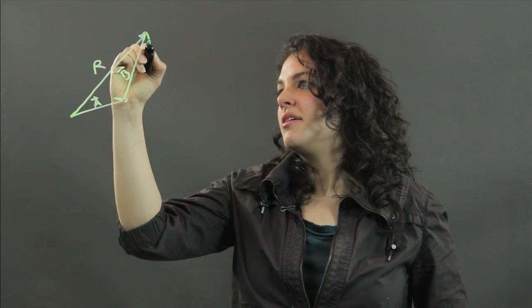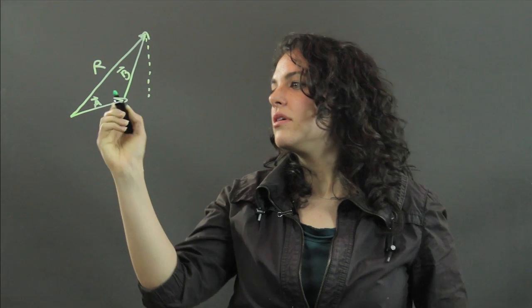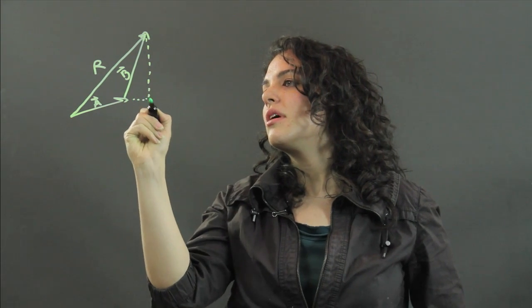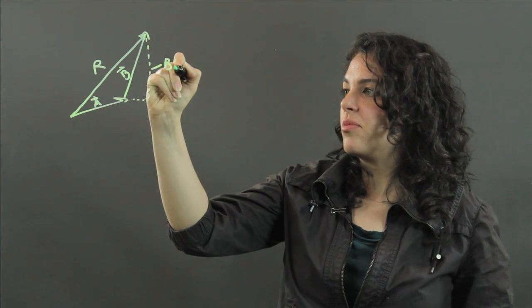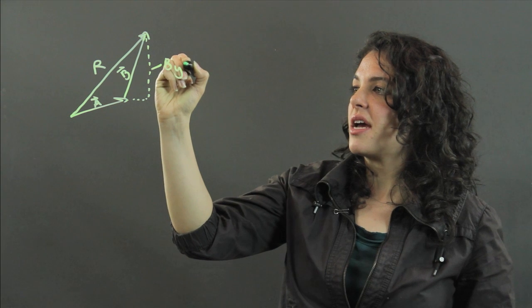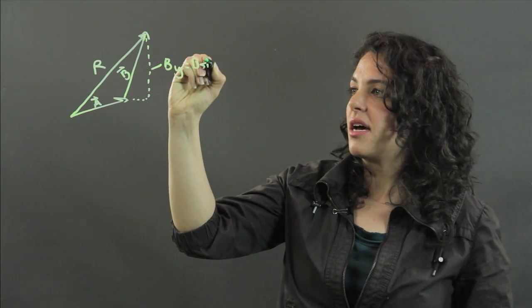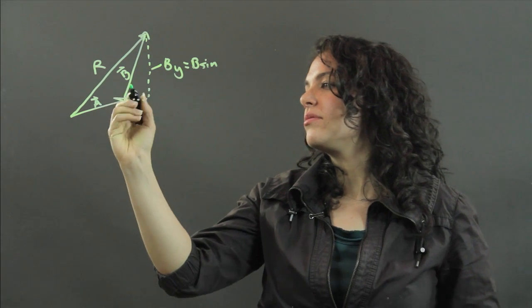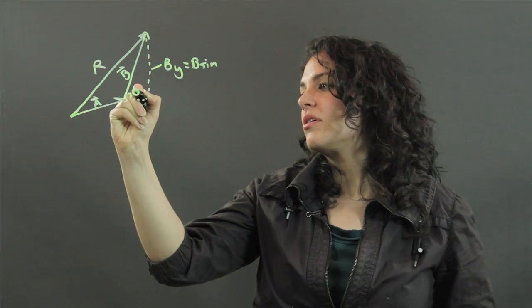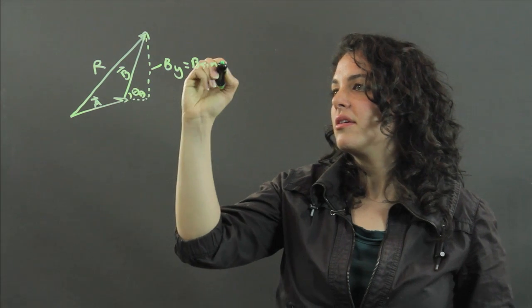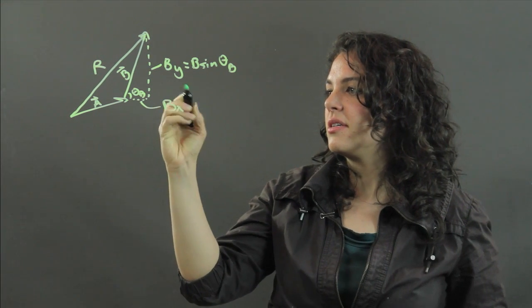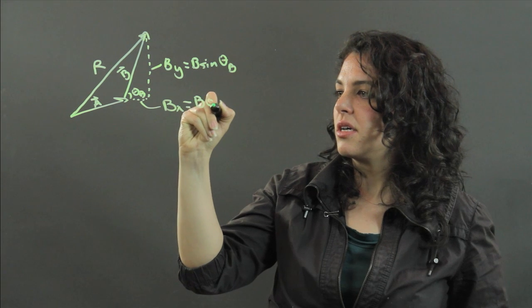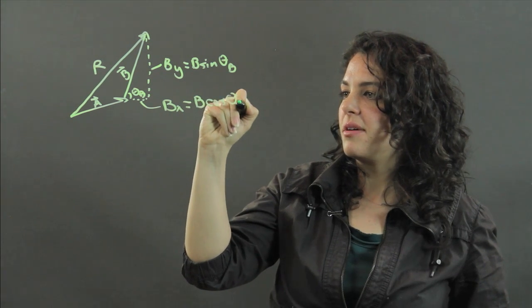Vectors a and b break down into x and y components. So b sub y can be broken down into b sine of theta b. b sub x equals b cosine of theta b.